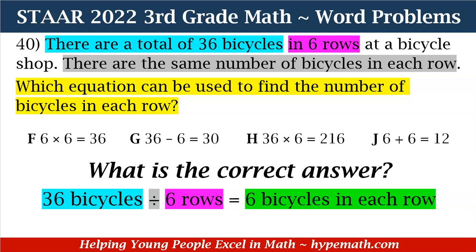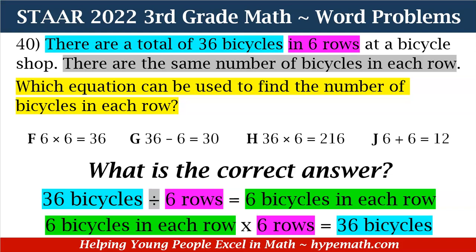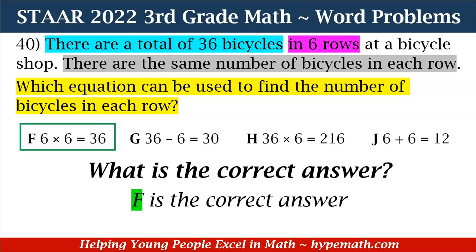As we look through our answer choices, we don't see 36 divided by six equals six listed directly. What we need to look for is the fact family — how else can we write this equation? Is it F: six times six equals 36? G: 36 minus six equals 30? H: 36 times six equals 216? Or J: six plus six equals 12? If you said that six bicycles in each row times six rows is equal to 36 bicycles, you are absolutely correct. So F is our correct answer. Great job, third graders.